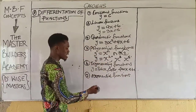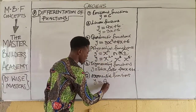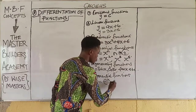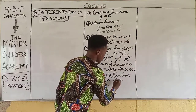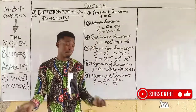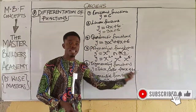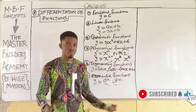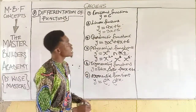We also have exponential functions. For exponential functions, you have y = eˣ or y = e^(cx), where c or k is a constant. It can be 5x, 6x, 10x, or a negative value. These are exponential functions.